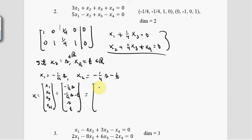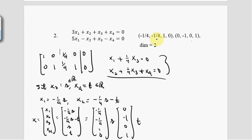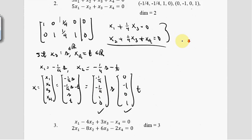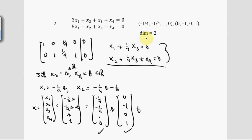This is [−1/4, −1/4, 1, 0] times s, plus [0, −1, 0, 1] times t. How many vectors do I have in this basis? Two of them. So the basis for the solution space is {[−1/4, −1/4, 1, 0], [0, −1, 0, 1]}, and the dimension is two.